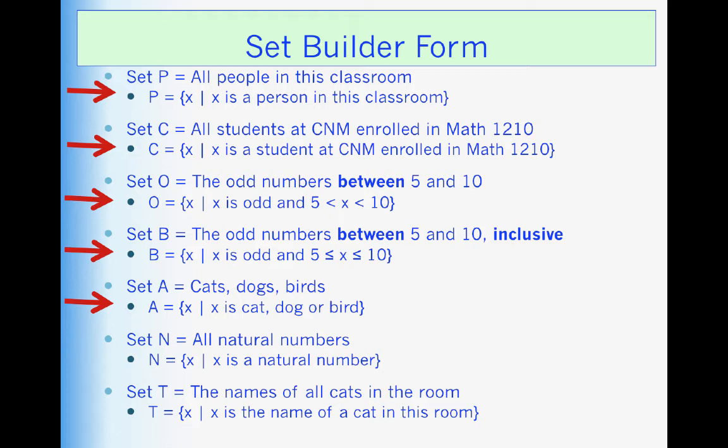And now notice the difference between that and the next one where I have my endpoints inclusive. So we have 5 less than or equal to x less than or equal to 10. Cats, dogs, birds. Well, about the only way you can do that with set builder form. All items such that that item is a cat, dog, or a bird. Here we go, all natural numbers. And finally, the names of all cats in the room. All items such that that item is the name of a cat in the room.